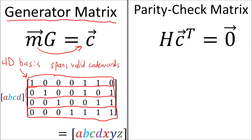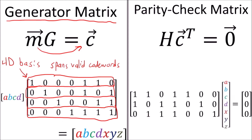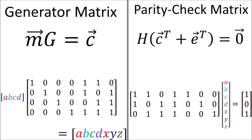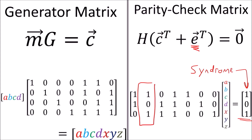Also, when the parity check matrix H acts on a valid codeword, we'll get the 0 vector as the output. In other words, the set of all valid codewords is the null space of the H matrix — the set of all vectors that map to the 0 vector. If there's an error in the codeword, the output vector will be the syndrome vector of that error, and we can match the syndrome vector to a column in the H matrix to figure out which bit we need to fix.